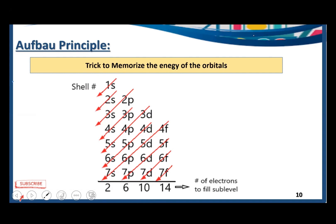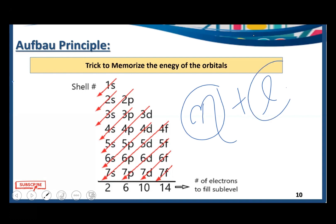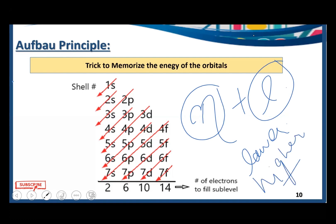In conclusion, the Aufbau principle tells us how electrons fill different orbitals in order of increasing energy. We fill orbitals with lower energy levels completely first, then move to higher energy levels. We use the n plus l rule to find orbital energies, where lower n plus l fills first; if n plus l values are equal, we use the lower principal quantum number n.